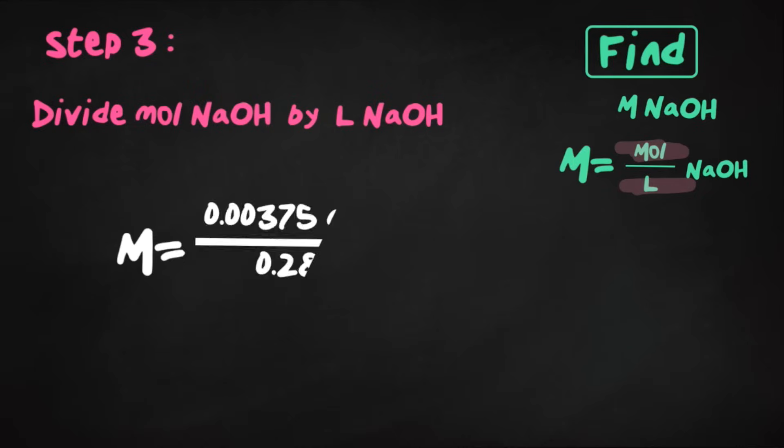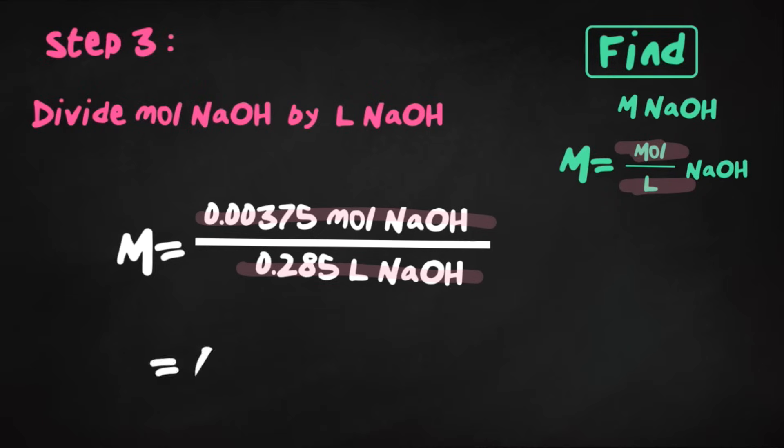So I'm going to put the moles of NaOH on top that we found in step one, and divide that by the liters of NaOH that we found in step two. Once we do this, this would give us 0.0132 molar solution of NaOH. So by molar solution, I really just mean molarity. That capital M means molarity. You could also put moles over liters as your final answer, but you'll commonly see a capital M.